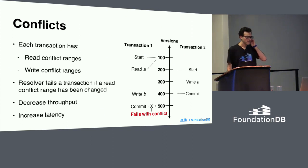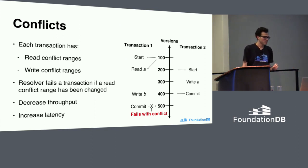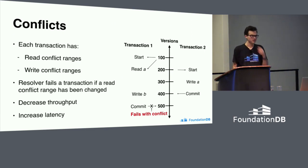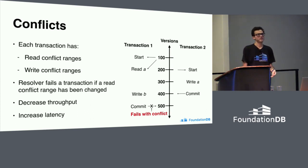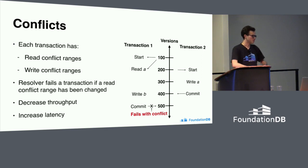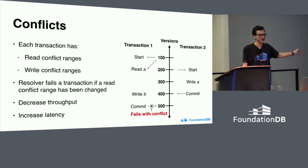So what happens if you get a conflict? Typically you're going to retry. This creates two performance problems. One is that each time you do an unsuccessful attempt at committing something, you'll end up wasting resources on the cluster. If you have a lot of conflicting things, you can decrease the total throughput of your system because a lot of it's being used to handle things that don't get committed. The other problem is an increase in observed client latency — every time you retry, that's another round of requests to the database that your user has to wait through.